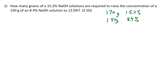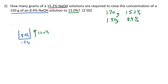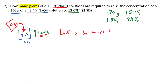Let's take up question 2: how many grams of a 15.2% solution of NaOH is required to raise the concentration of 150 grams of 8.4% NaOH to 12%? We're going to take 150 grams of the 8.4% solution and add some of the 15.2% solution until the final concentration is 12%. The question asks how many grams of the 15.2% solution — let X be the mass of that 15.2% NaOH solution in grams.